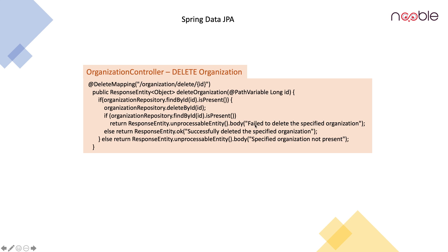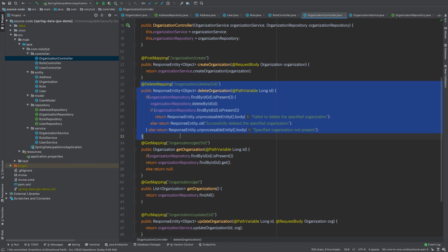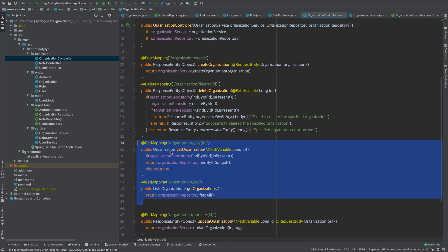If it is not deleted, I am sending a message: fail to delete. Else, successfully deleted. And if it is not present, I am sending: specified organization is not present. For the read organization method, it is a GET mapping where you send in the ID and it searches the database. If it is present, it returns the organization, else it returns null. We also define a method which returns all the organizations present in the database — it is a GET mapping using the findAll method, whereas the single-record method uses the findById method.